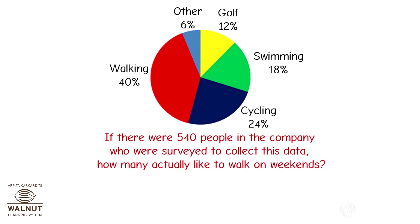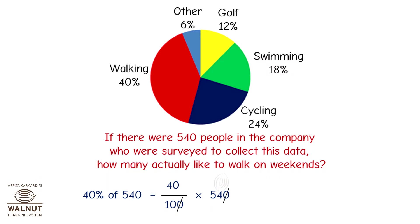You can see in the pie chart that 40% of 540 people like to walk on weekends. 40% of 540 is equal to 40 upon 100 into 540. Cross out the zeros and we get 4 into 54, which is equal to 216 people. Therefore, out of 540 people, 216 people like to walk on weekends.